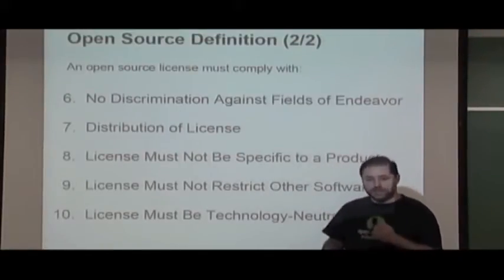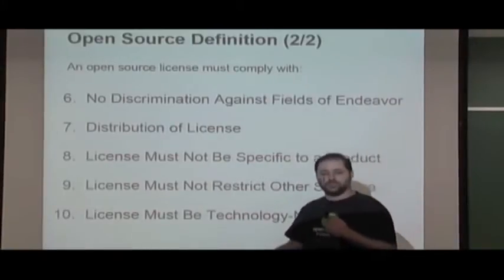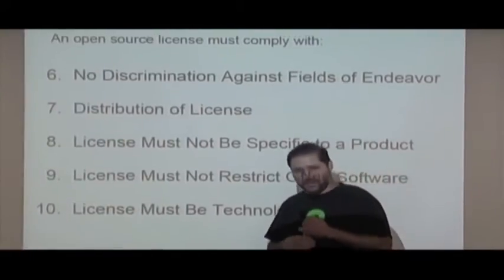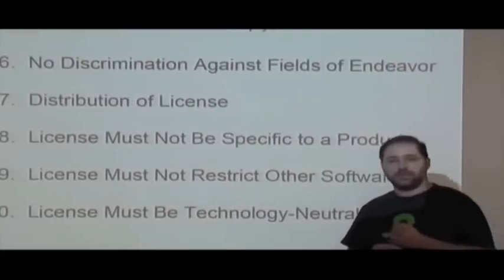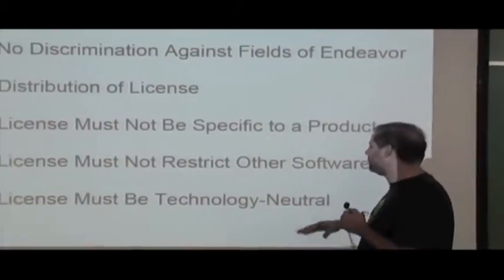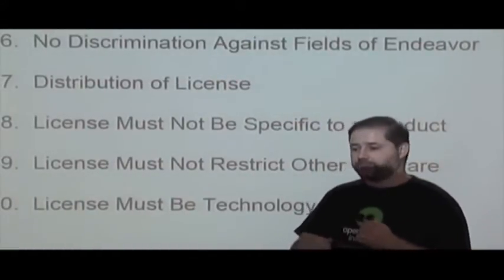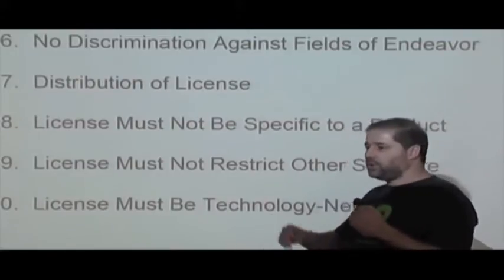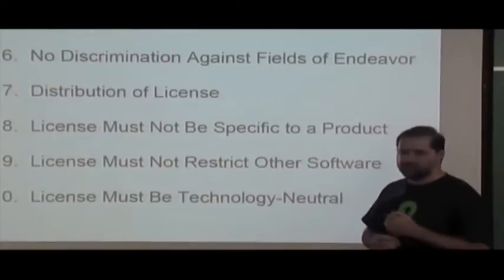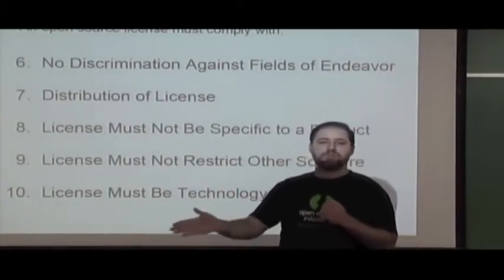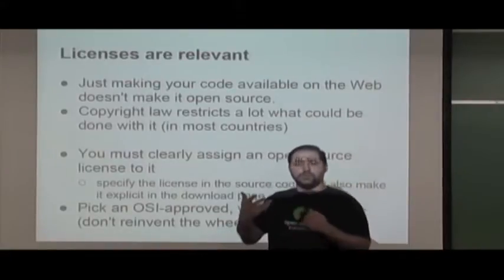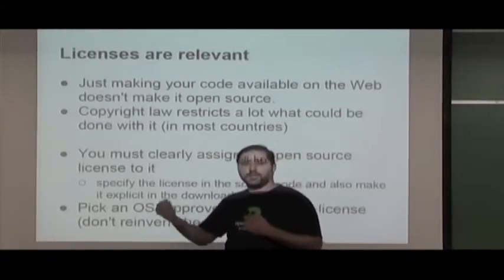Distribution of the license must not be tied to other forms such as signing an NDA. The license must not be specific to a product, must not restrict other software, and must be technology neutral — you cannot require a particular technology to have access to the software. In all of this, the Open Source definition shows what a license must comply with for the software it covers to be considered open source.